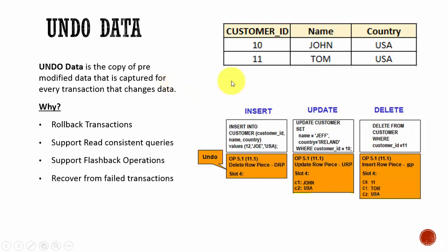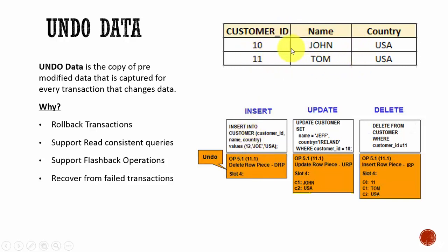Let's take a look at an example. Here we have two rows. When a user is performing an INSERT statement and trying to insert a row, what is stored in the Undo? It is storing the delete information — meaning, if we have to do an Undo, deleting that inserted row will bring it back to its original state. So here we have two rows; when we insert, a new row is added; when we Undo, that row is deleted and we are back to the original two rows.